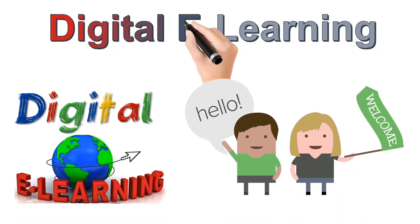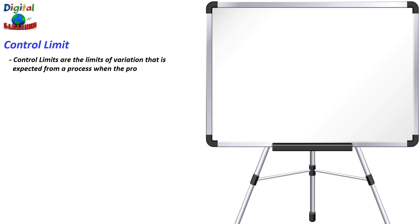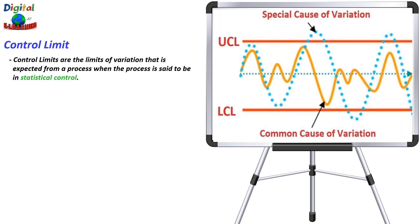Hello and welcome to yet another video series from Digital E-Learning, your one-stop solution for all your learning needs. Control limits are the limits of variation that is expected from a process when the process is in statistical control. Statistical control means that only common causes of variation exist and no special causes of variation are present. Such processes generally show consistency in their performance over time.